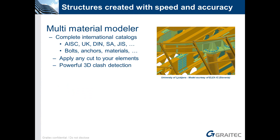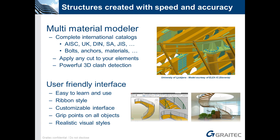Using Advanced Steel, full structures can be created with speed and accuracy. We have the full global range of standard beams, bolts and anchors. You can apply any features, cuts and joints you require to those beams and perform clash detection on them. All the time this is using a simple modern ribbon-based interface that's user-friendly, using shaded rendered views to clearly visualize your model and structure.